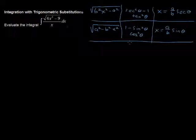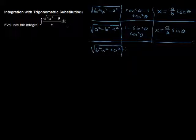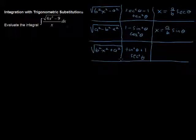The last form is: what if we have the square root of b squared x squared plus a squared — an addition under the radical? Then that might bring up ideas of this identity: tangent squared of theta plus one equals secant squared of theta. That would allow us to simplify things. So if we had this form, we would let x equal to a over b times tangent of theta.